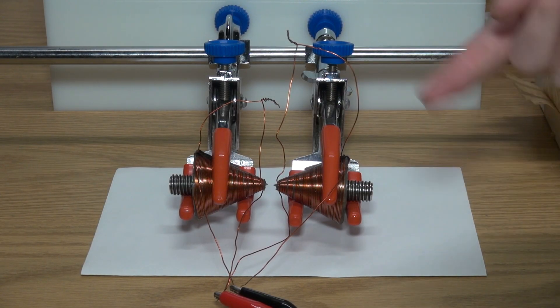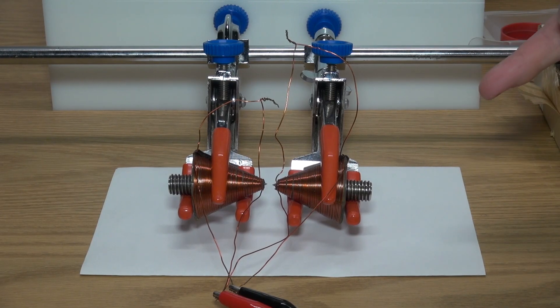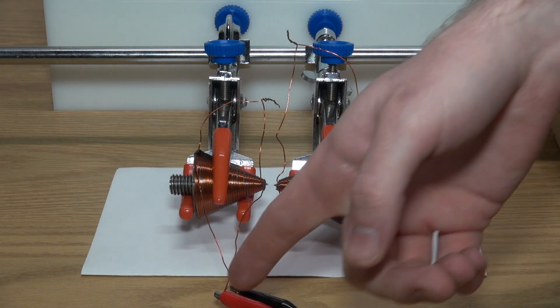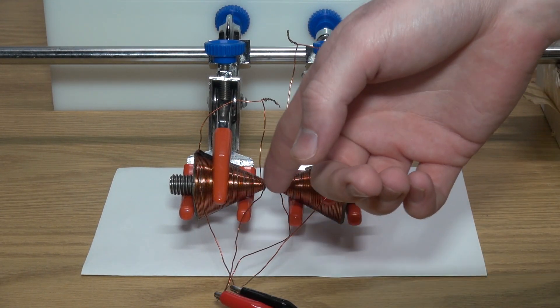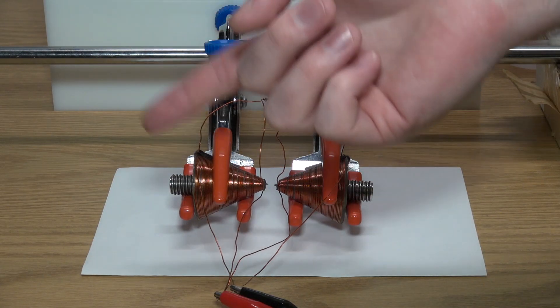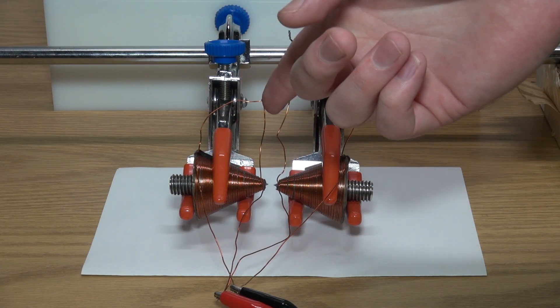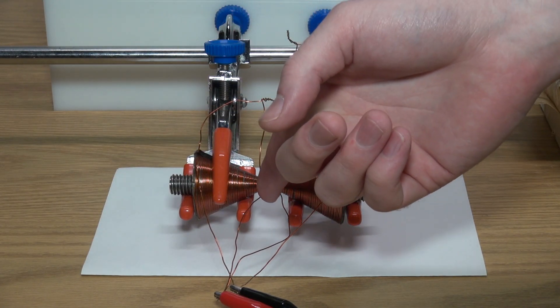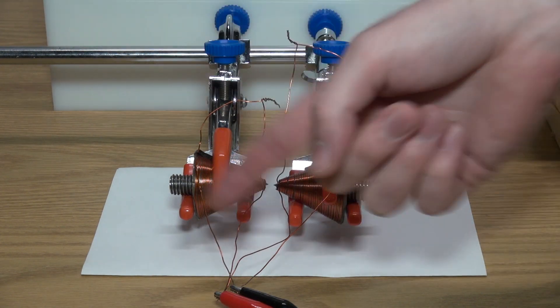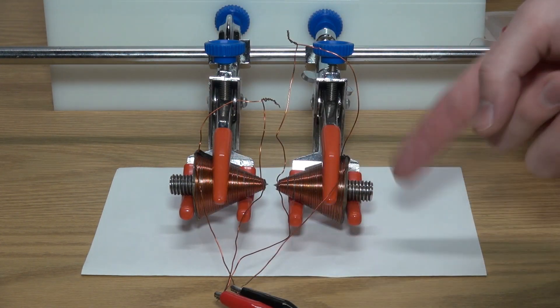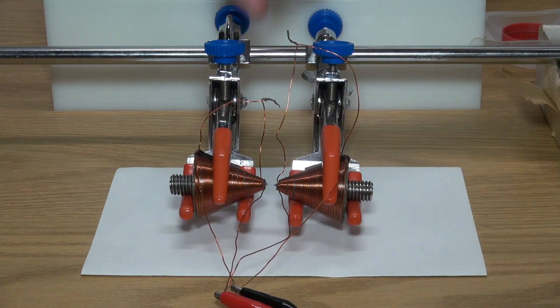So the coils are wound in a Tesla bifilar. So in essence, if you follow the positive, goes into the tip, it winds all the way through, but then it comes out and it doubles back in and winds all the way through, and then comes out negative either side. So that's what these are.